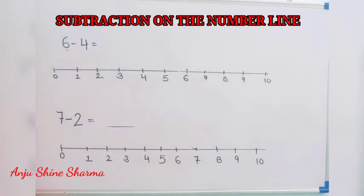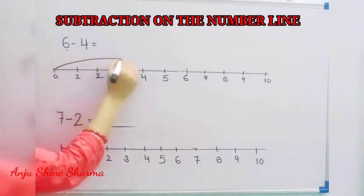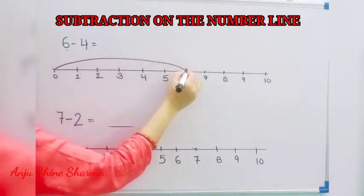First question is 6 minus 4. Here first number is 6. So we start from 0 and reach at 6 like this. We make a curve.